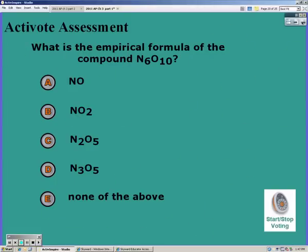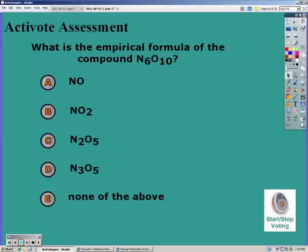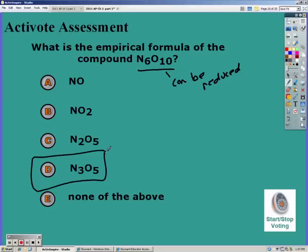The last type of empirical problem you can have is this one, where they give you a molecular compound and want you to find the empirical. Notice that the N6O10 can be reduced. Empirical formulas cannot be reduced. So we just need to find out what this reduces down to. We can divide all of them by two, giving us N3O5.